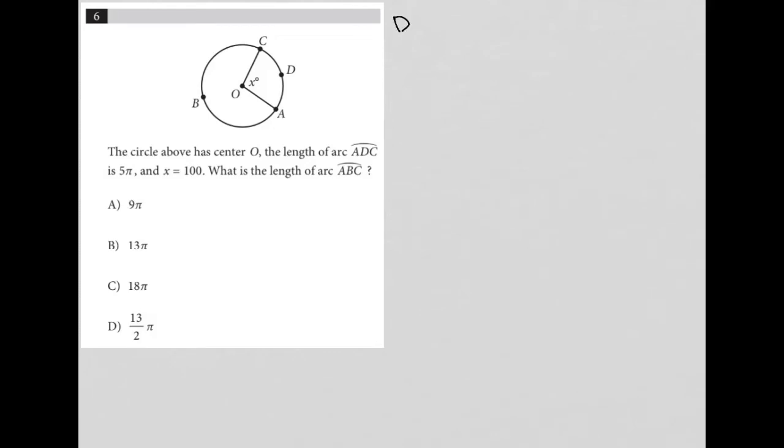This question is a diagram question. Let's read the question and see the information provided. The question says the circle above has center O. The length of arc ADC is 5π.